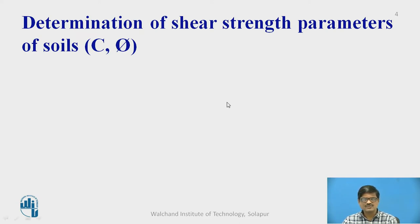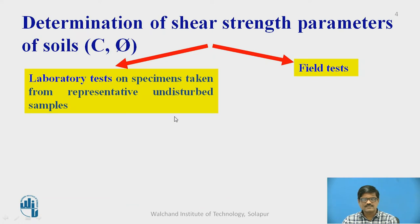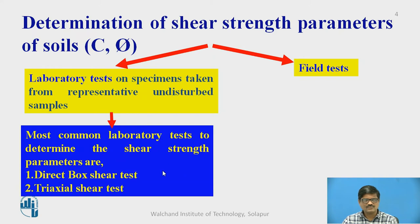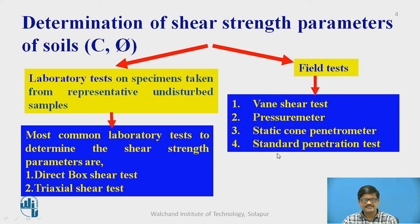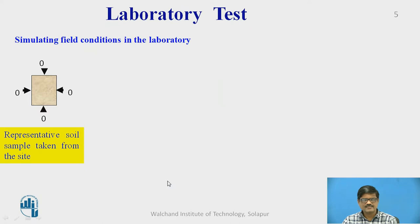Now let us see the determination of strength parameters in the laboratory. There are basically two approaches: one is a laboratory test and another is a field test. In the laboratory, two very important tests are performed — one is a direct box shear test and another is a triaxial shear test. In the field, tests include the vane shear test, pressure meter test, static cone penetrometer test, and standard penetration test. In this session, we will focus on the direct box shear test.